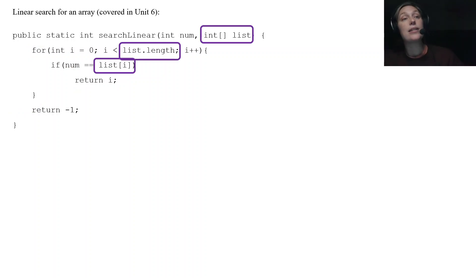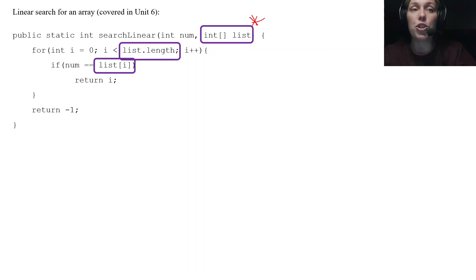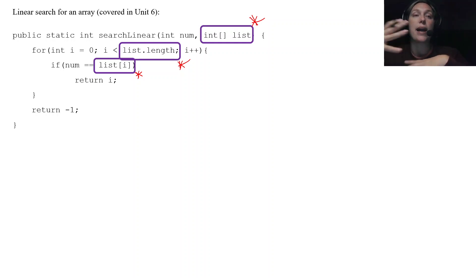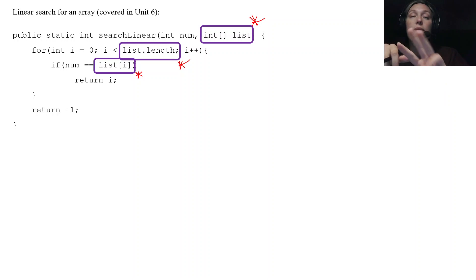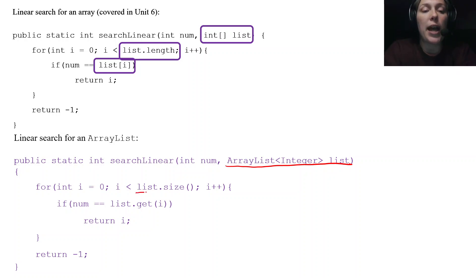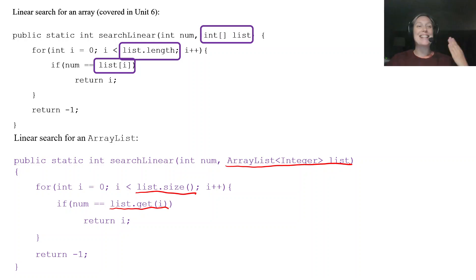Now I'm going to highlight the points that change for a linear search on an ArrayList. There would be three pieces that change. First, we would pass an ArrayList to the method. Second, for an ArrayList we don't use .length — we use .size(), and it's a method. Third, we access ArrayList elements not with square brackets but with .get(). The linear search for an ArrayList looks exactly the same; we just modify those three pieces for ArrayList syntax.